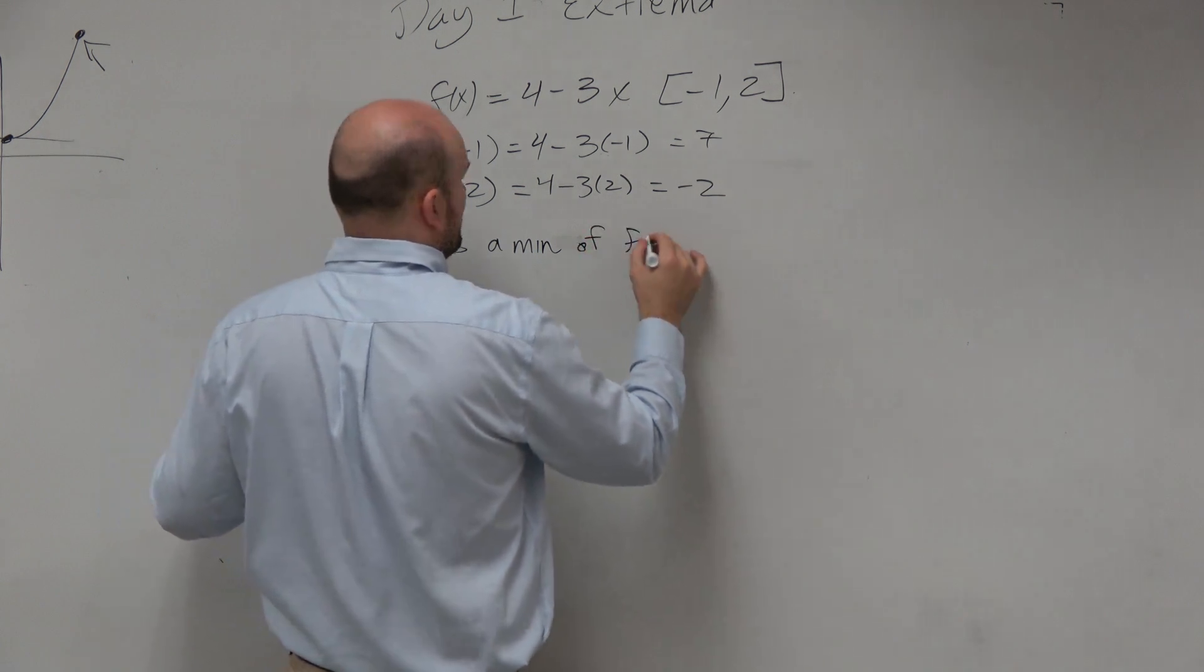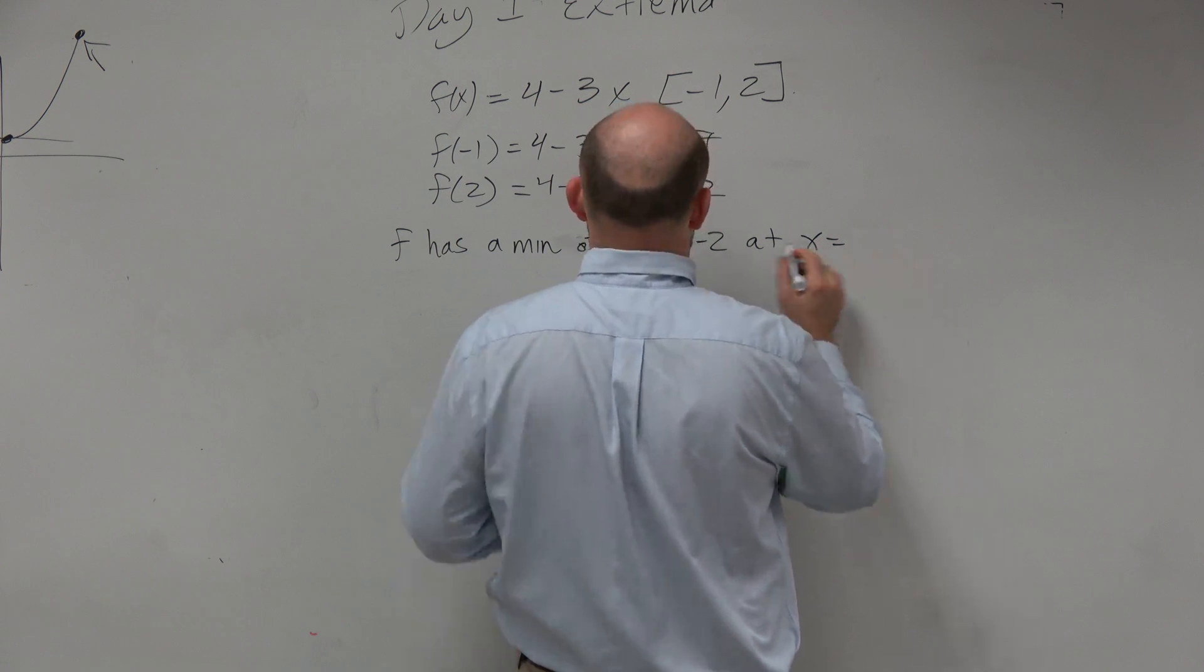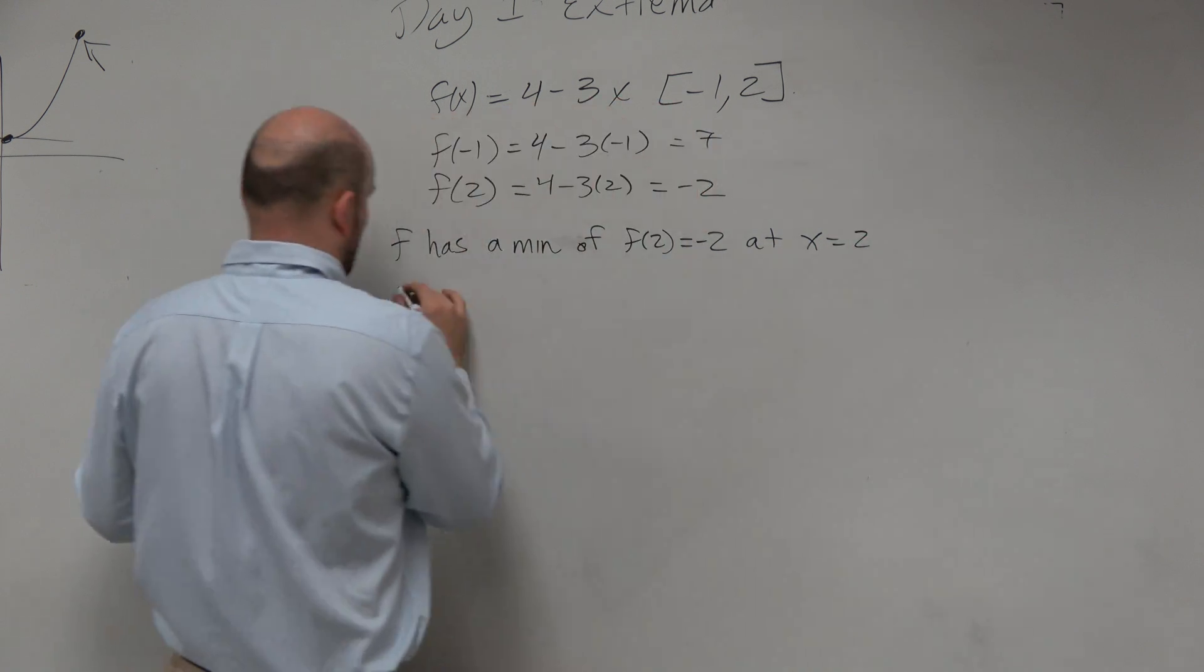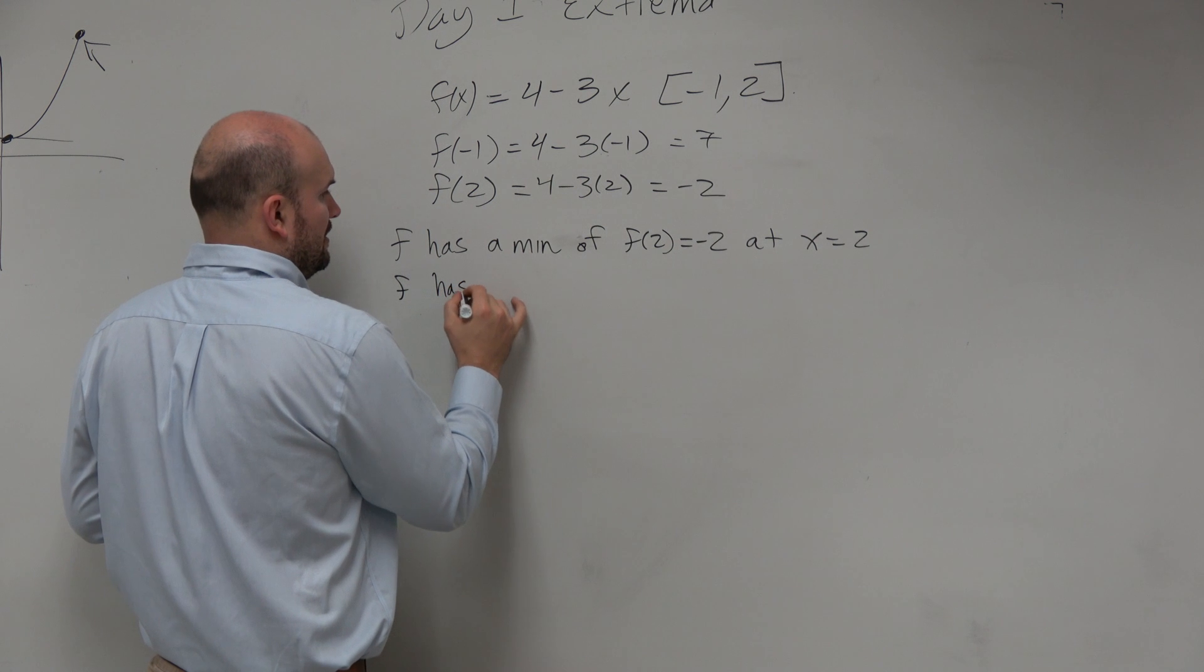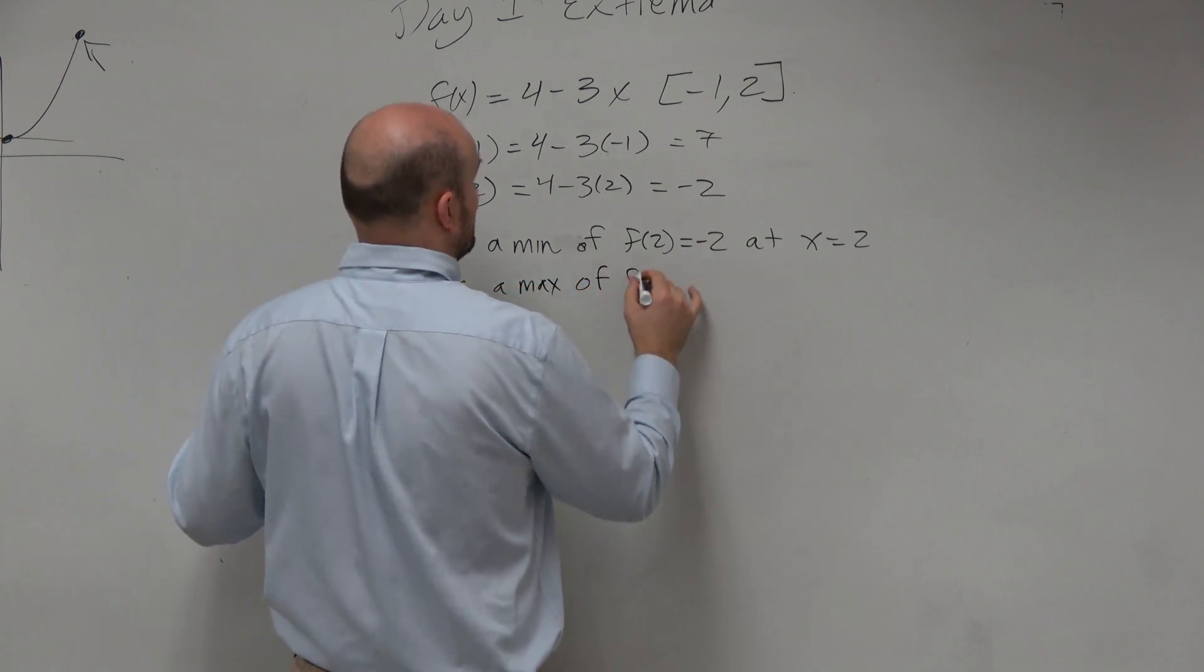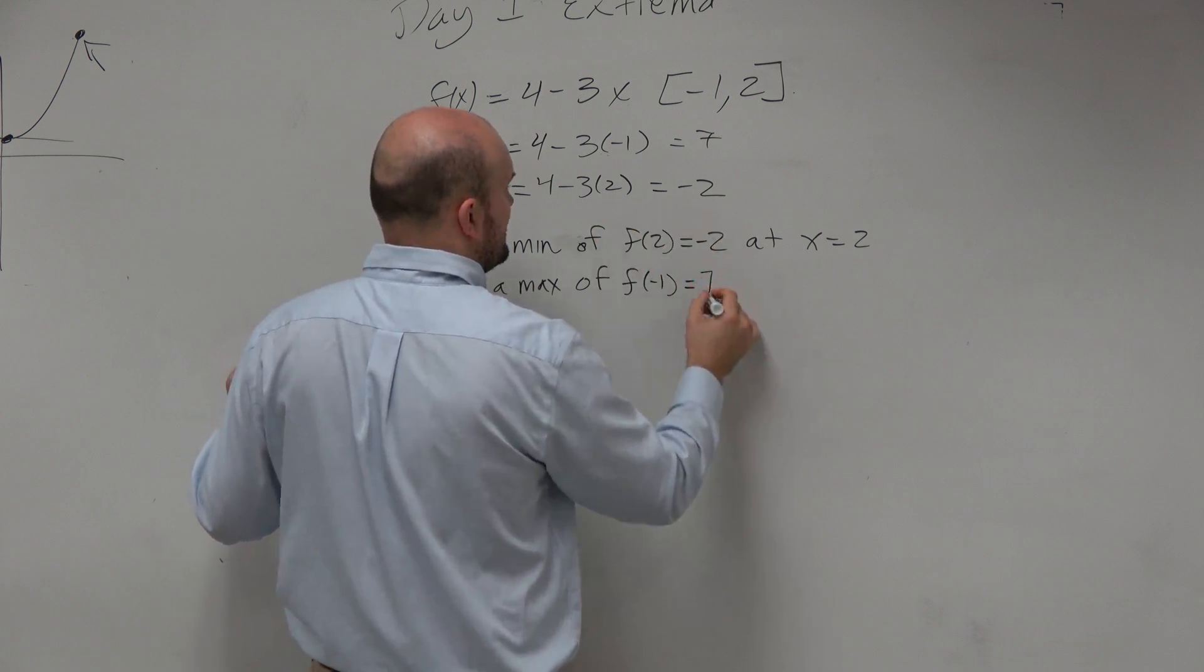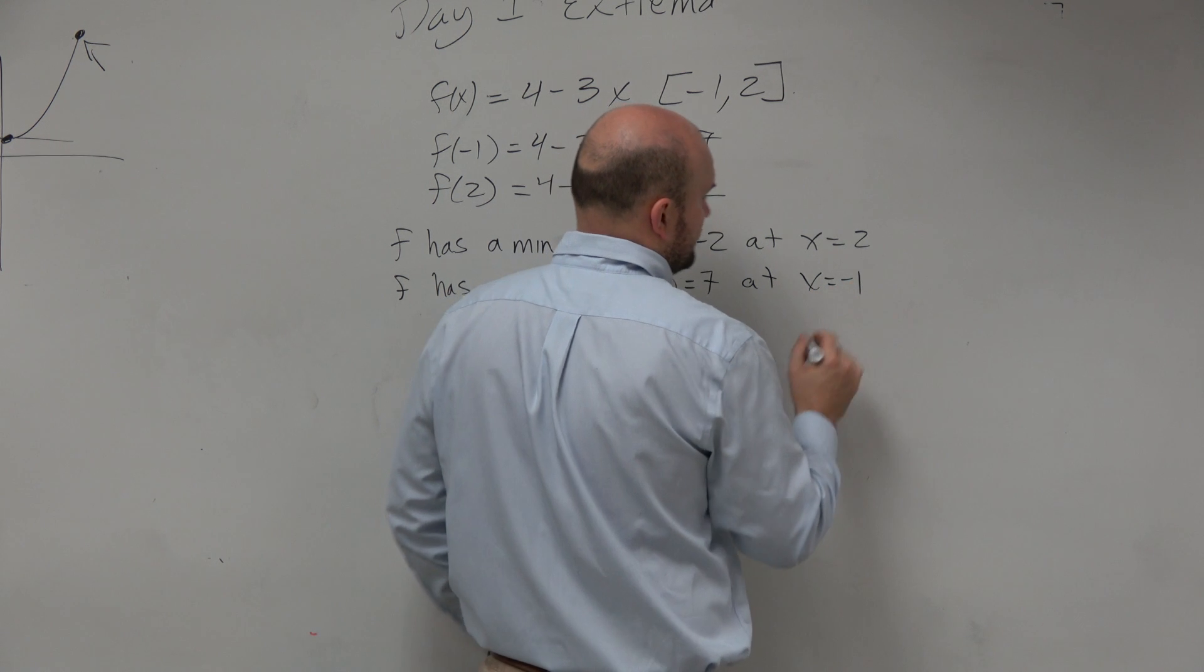of f of 2 equal to negative 2 at x equals 2. And f has a maximum of f of negative 1 equals 7 at x equals negative 1.